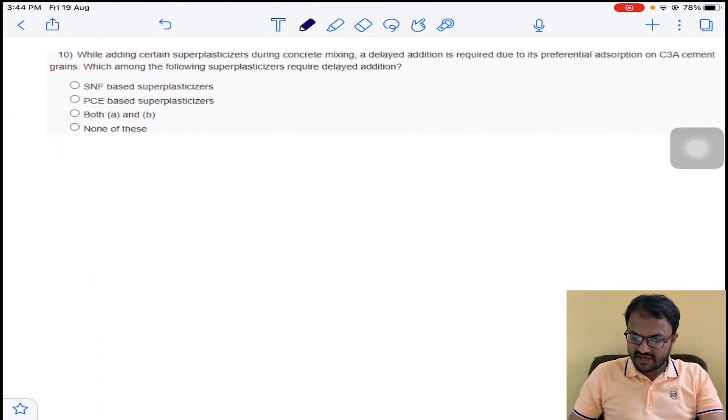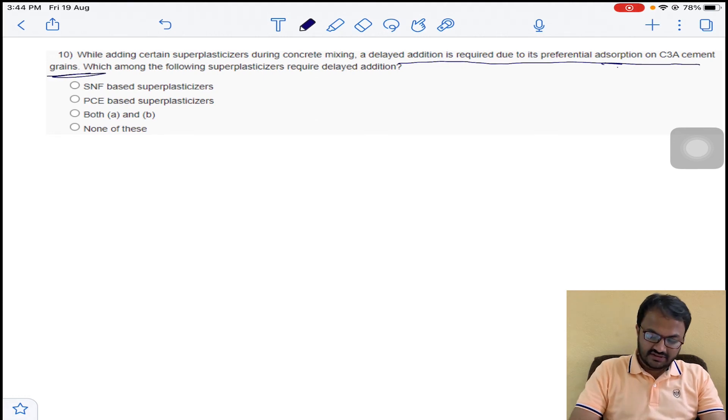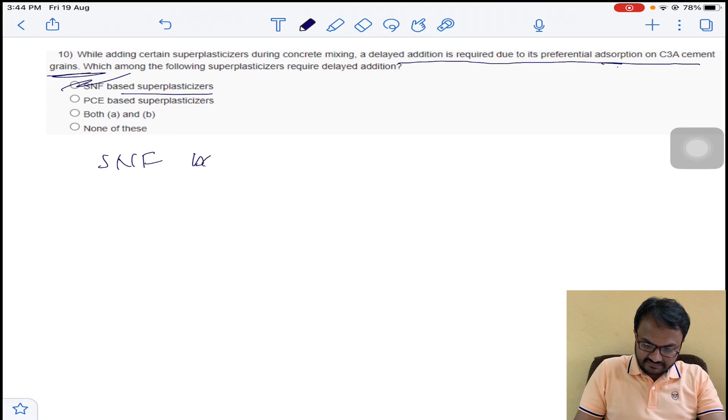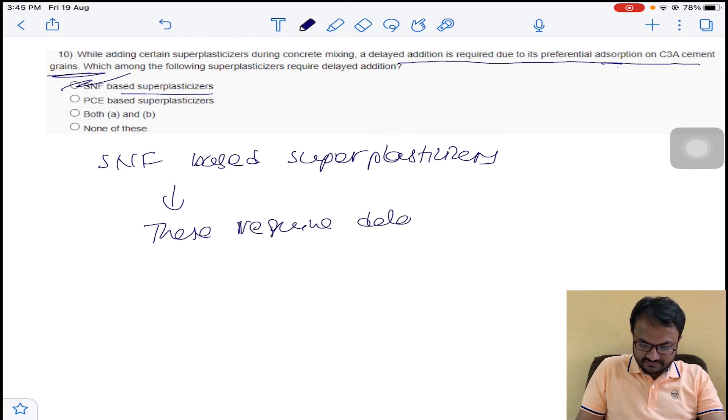Last question for the assignment is the preferential adsorption of C3A cement grains. Now the answer is SNF-based superplasticizers are required. These require delayed addition. So option A for question number 10.